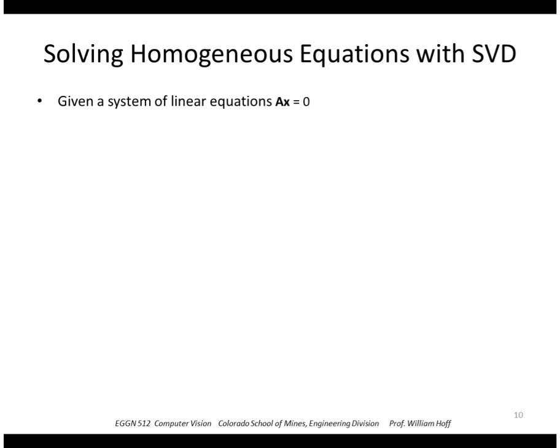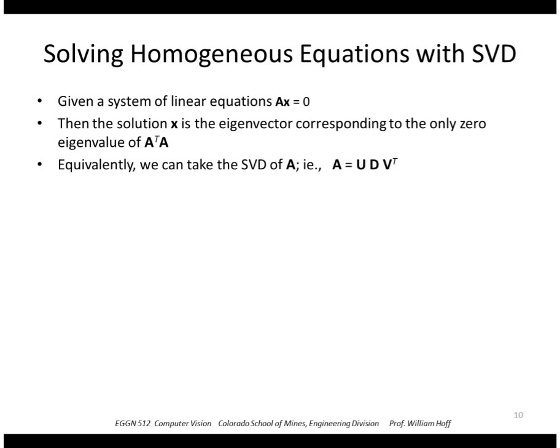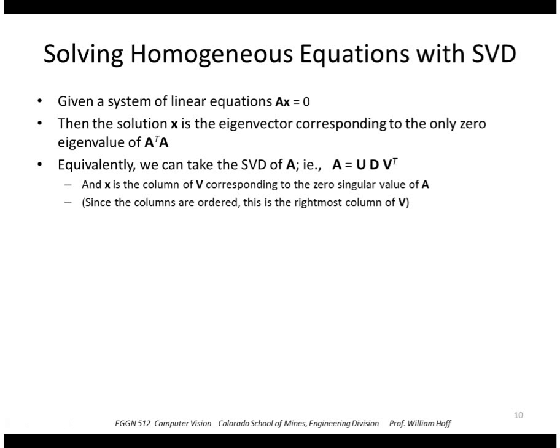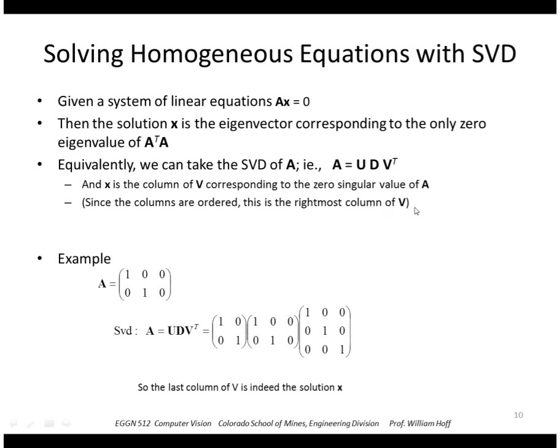Alright, so to use SVD to do this, we start with our equations Ax equals zero. We want to find the eigenvector corresponding to the zero eigenvalue. We do that by taking the SVD of A. And then we find, remember, the columns of V are the eigenvectors of A transpose A. So we want the eigenvector corresponding to the zero eigenvalue, and since the columns are ordered, that's the rightmost column of V. So for example, again, that's saying matrix A, the SVD decomposition of that looks like this, and here is the rightmost column of our vector V.